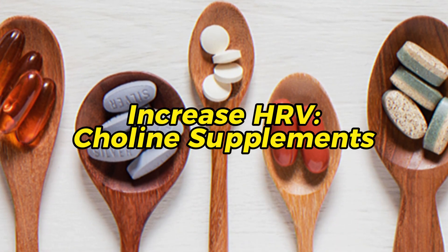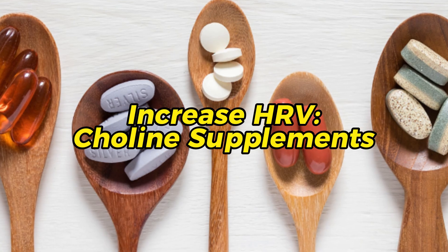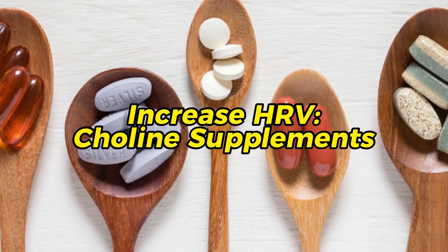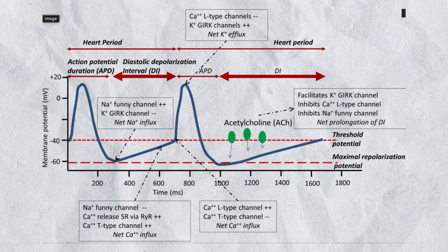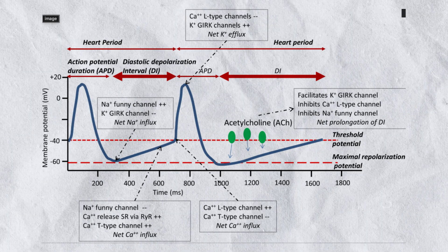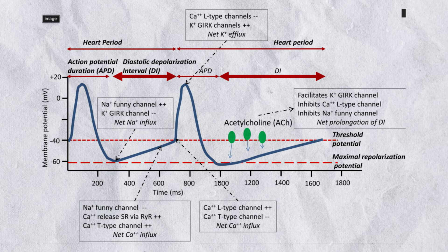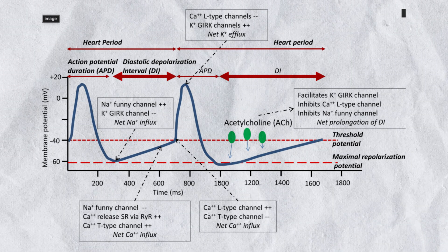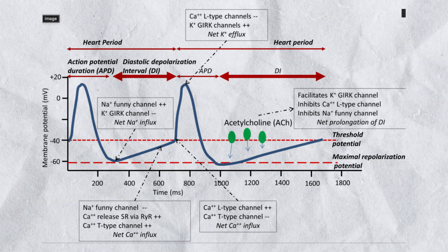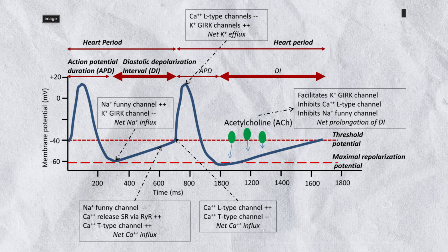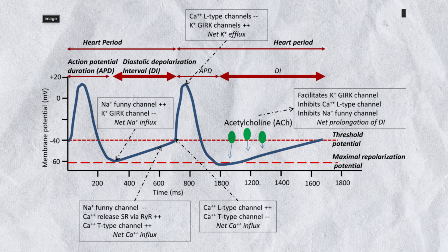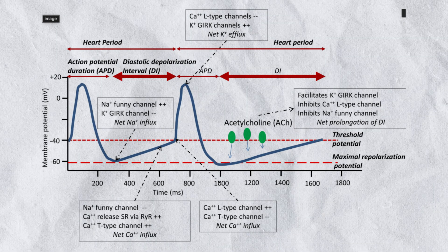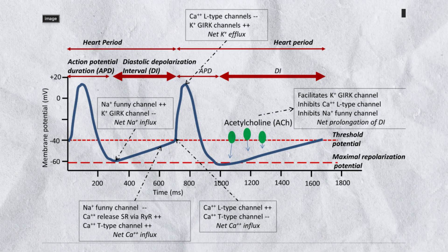The next intervention is a supplement — choline supplements such as alpha-GPC and CDP-choline. These are the best choline supplements. Changes in the sodium-to-potassium pump and acetylcholine release actually alter the threshold potential for successive heartbeats. Acetylcholine can improve and optimize the parasympathetic nervous system, which in turn benefits HRV.